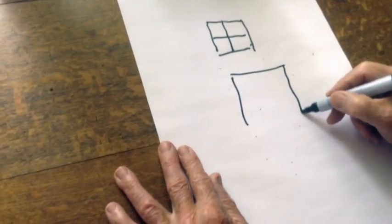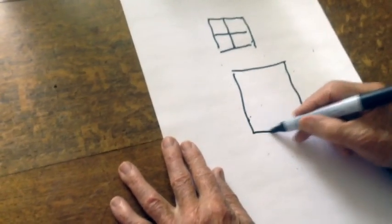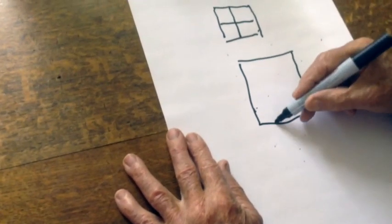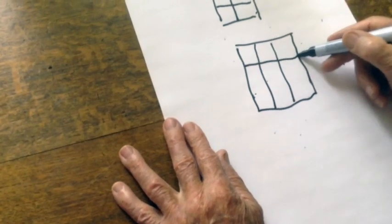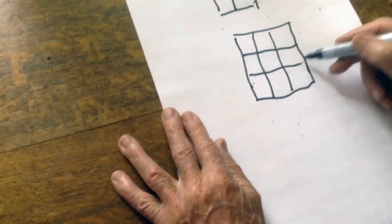Or I could do it into more squares. For instance, I could divide squares this way, and that's nine squares.